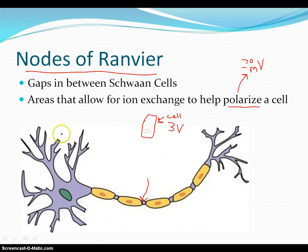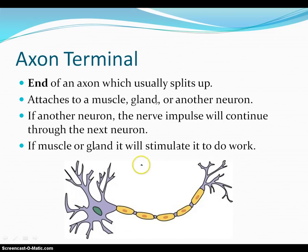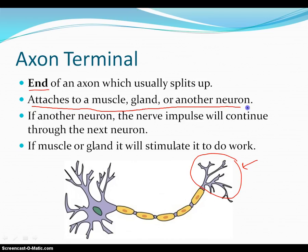These nodes allow for ion exchange to help polarize a cell — the different concentrations of ions across the node have the ability to produce the nerve impulse we need. The last part is the axon terminal, which is the end of the axon and usually splits up into several different parts. An axon terminal attaches to a muscle, gland, or another neuron. If it's attached to another neuron, the nerve impulse will continue to the next neuron most of the time. If it's attached to a muscle or gland, it will stimulate that muscle or gland to do work.